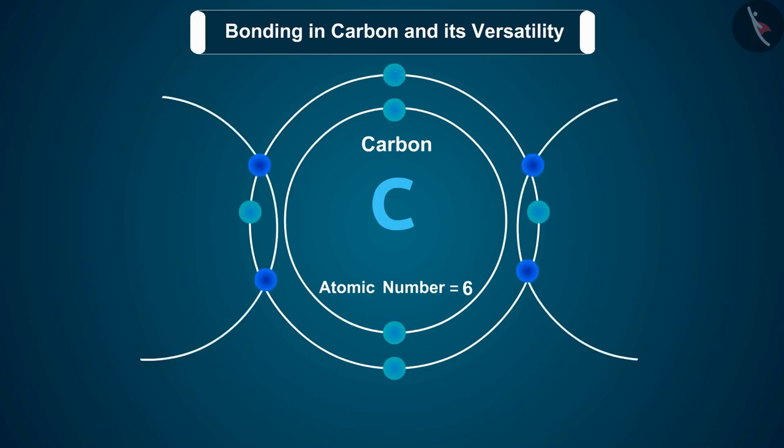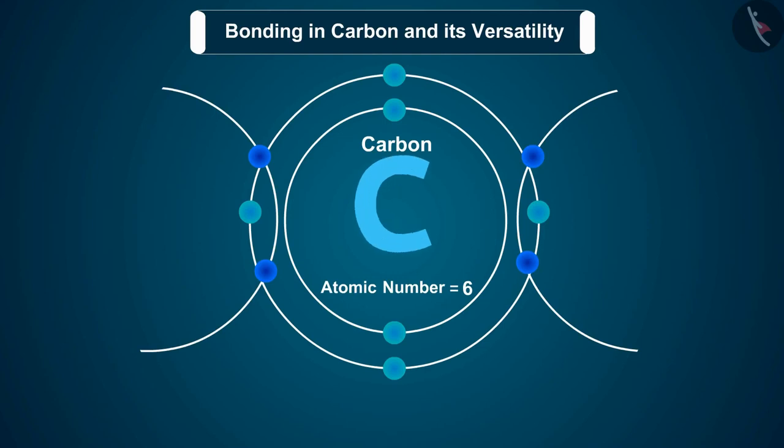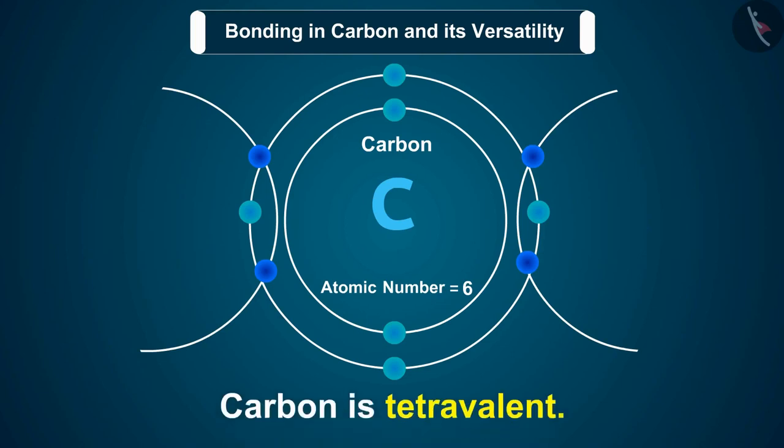Carbon overcomes this problem by sharing its valence electrons with other atoms of carbon or with atoms of other elements. Carbon atom has 4 electrons in its outermost shell, so it requires 4 more electrons to achieve the noble gas configuration, which it gets by sharing electrons. Since one carbon atom requires 4 electrons to achieve the nearest noble gas configuration, it has a valency of 4. That is, carbon is tetravalent.